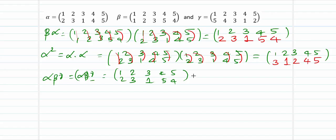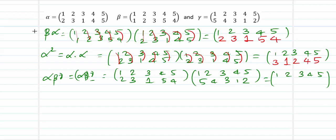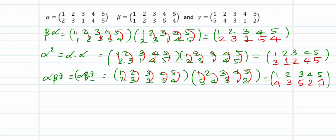Now tracing through the composition: 1 maps to 2 in αβ, then 2 maps to 4 in gamma, so 1 maps to 4. 2 maps to 3 in αβ, and 3 maps to 3 in gamma, so 2 goes to 3. 3 maps to 1 in αβ, and 1 maps to 5 in gamma, so 3 maps to 5. 4 maps to 5 in αβ, and 5 maps to 2 in gamma, so 4 maps to 2. 5 maps to 4 in αβ, and 4 maps to 1 in gamma, so 5 maps to 1. So alpha beta gamma = (1, 2, 3, 4, 5) → (4, 3, 5, 2, 1).